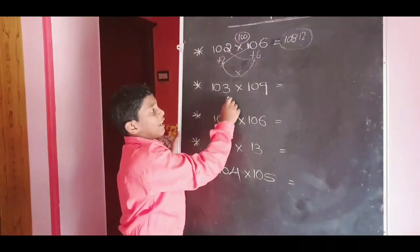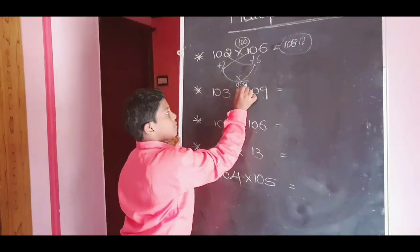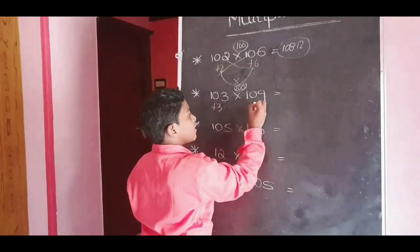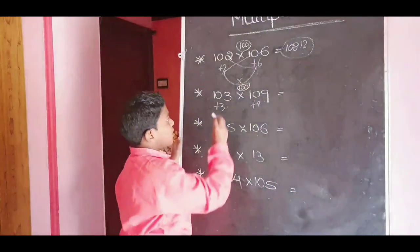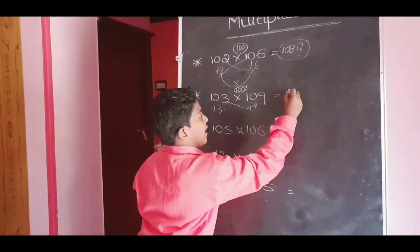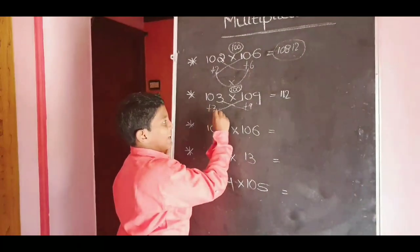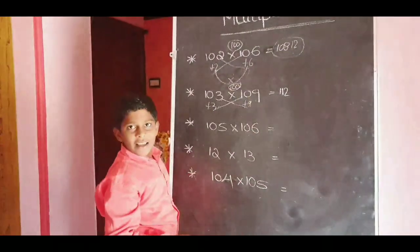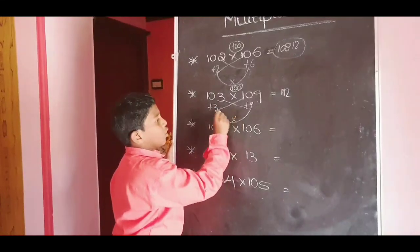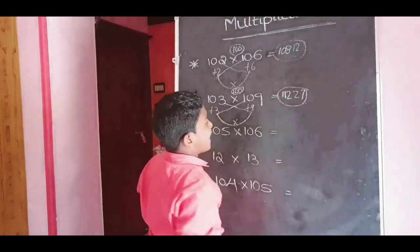Next question: 103 into 109. This is nearest to 100. For 100, 103 plus 3; for 100, 109 plus 9. 109 plus 3 equals 112. After, these two should multiply: 3 into 9. 3 nines are 27. The answer is 11227.